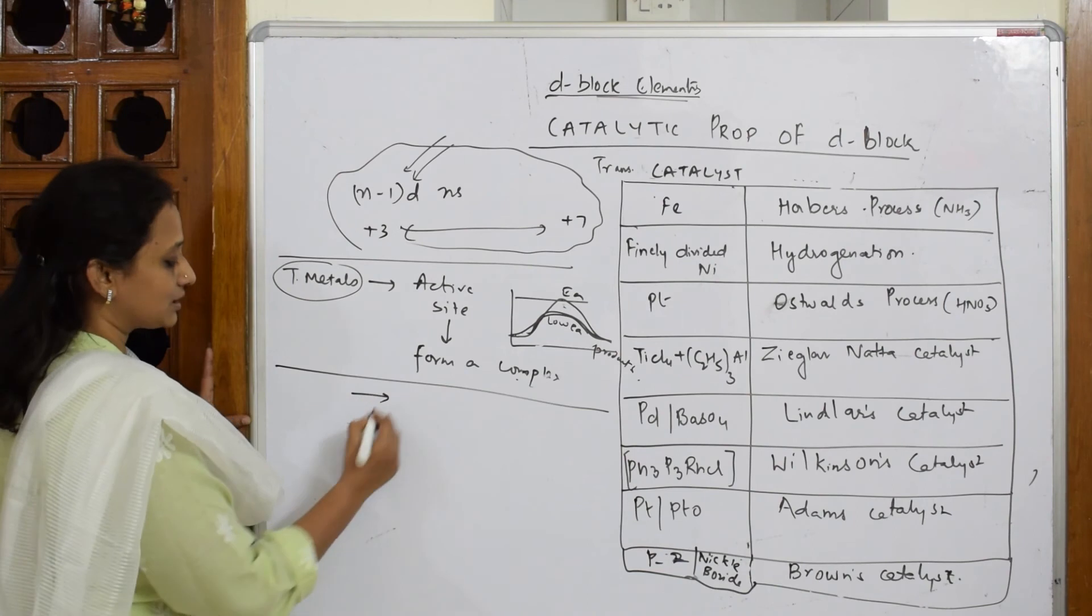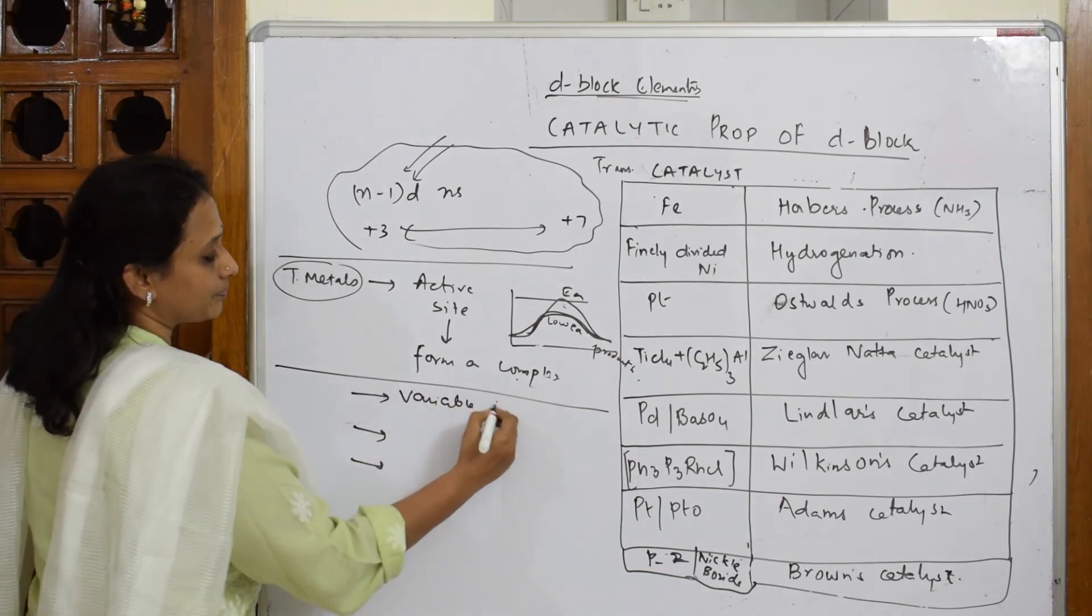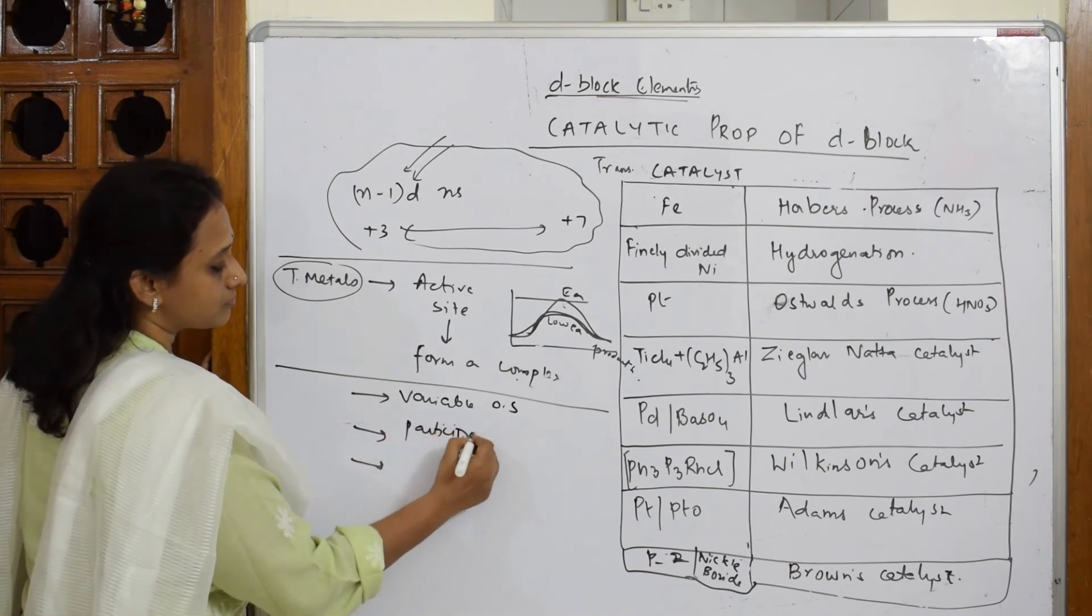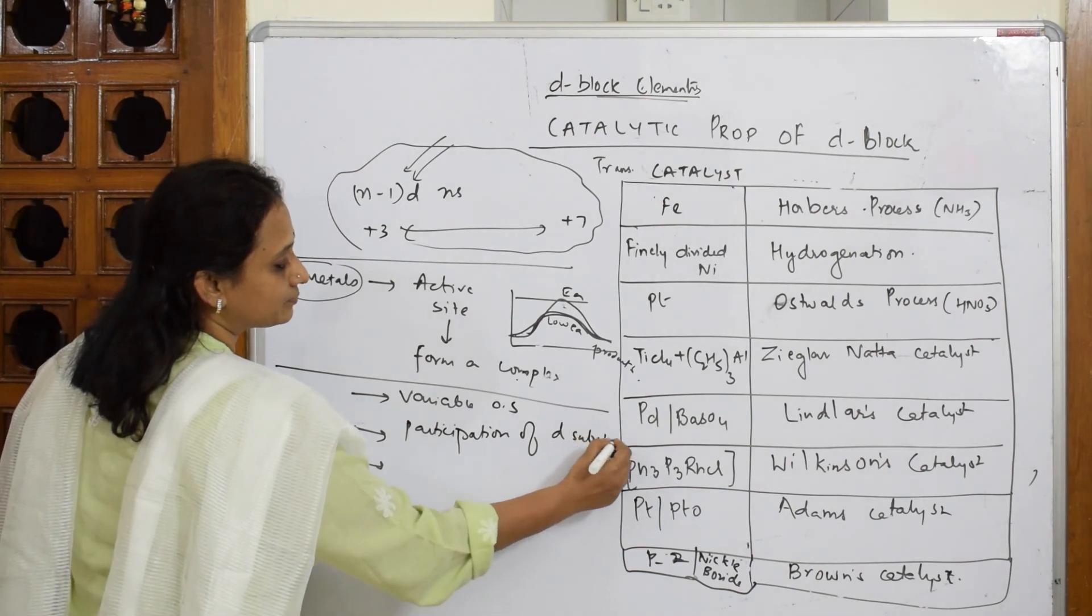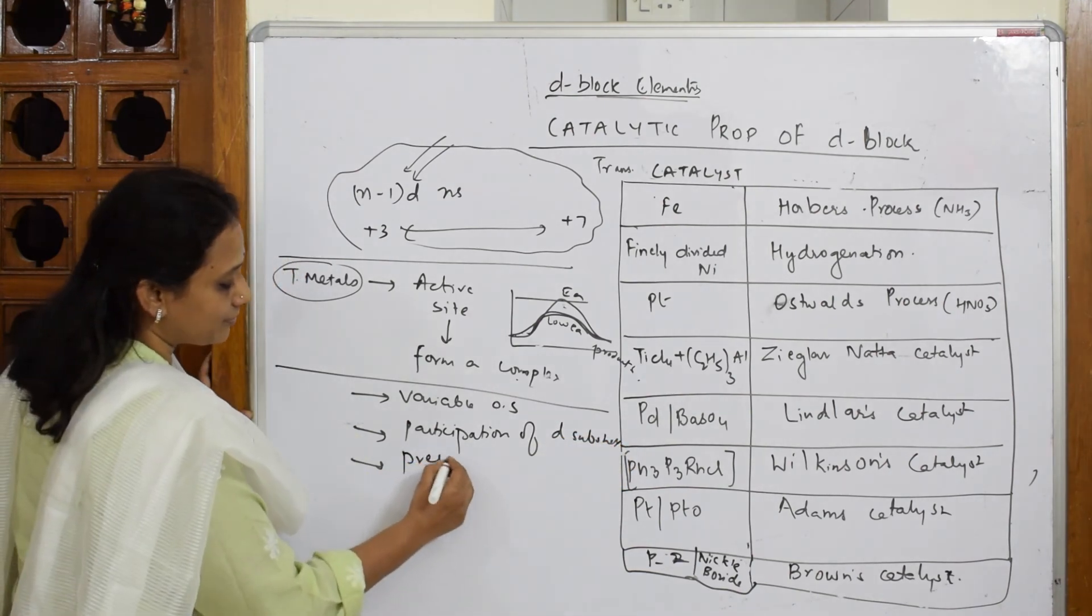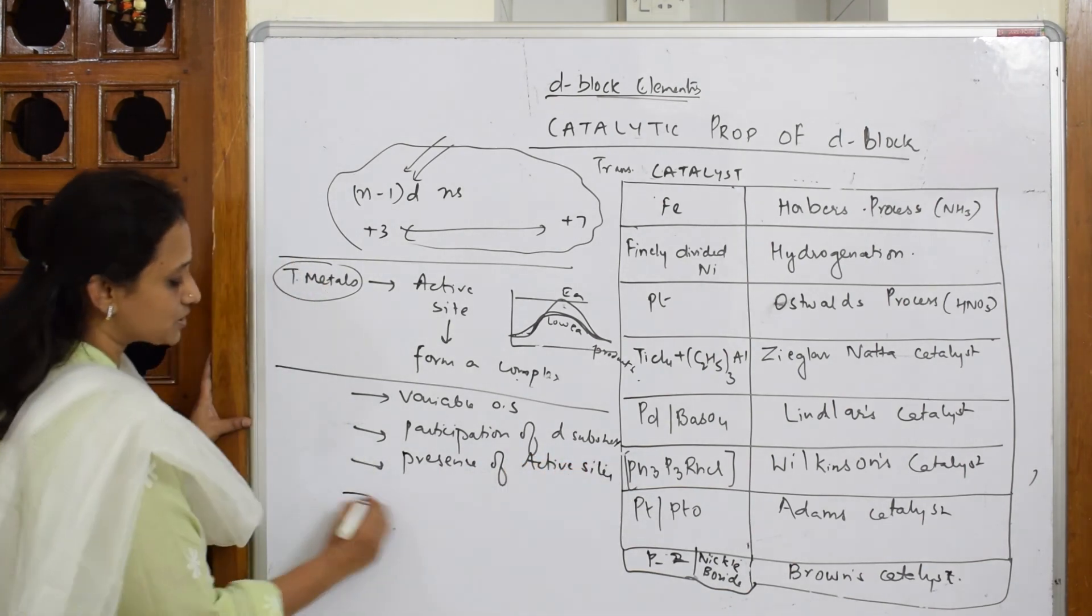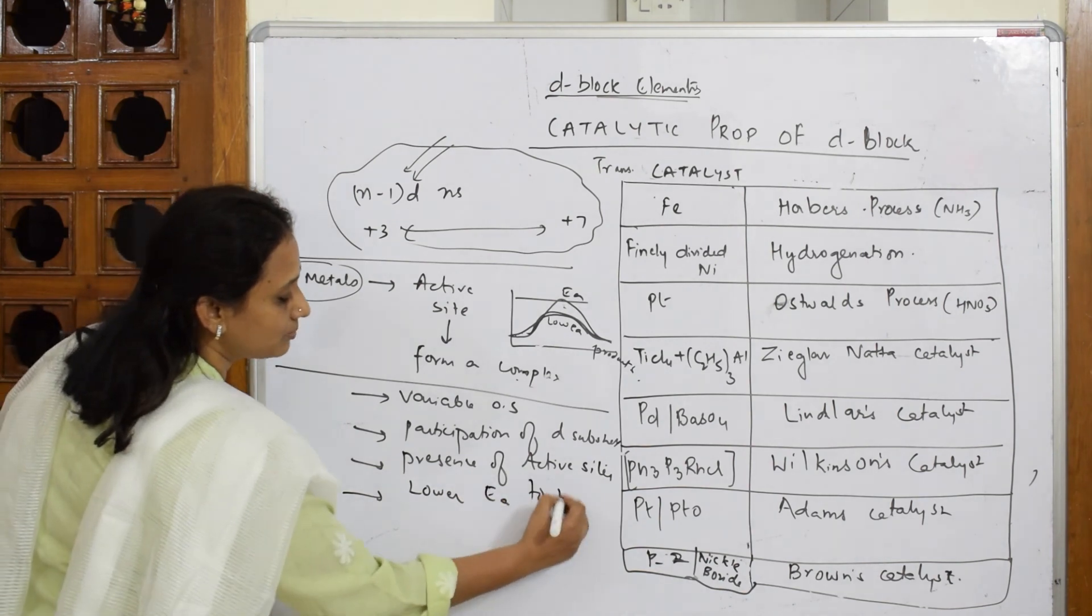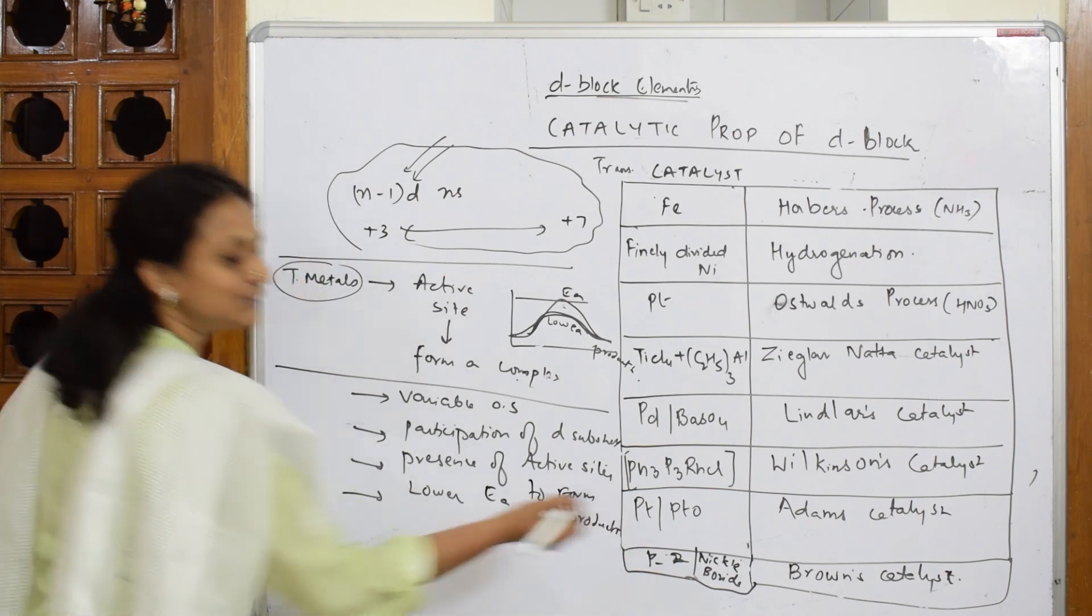Before I end that video, let us write that: variable oxidation state, participation of d subshell, presence of active sites and most important, lowers activation energy to form products. That's it. If you write this whole concept of catalysis, easy.